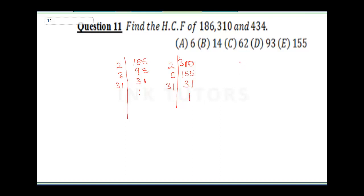The next one is 434. 2 can divide — 2 into 434 gives 217. Can 3 divide? Sum the digits: 2 plus 1 plus 7 gives 10, so 3 cannot divide. 5 can't divide either. Let's try 7 — yes, 7 can divide. 7 into 21 is 3, 7 into 7 is 1. So we get 31 again.